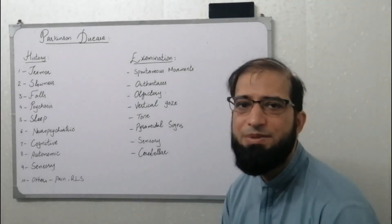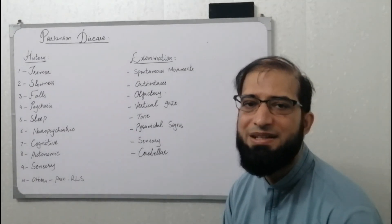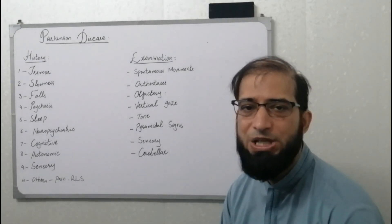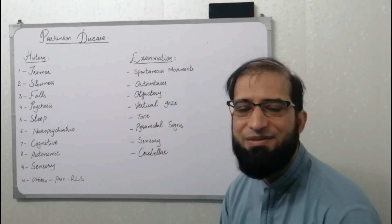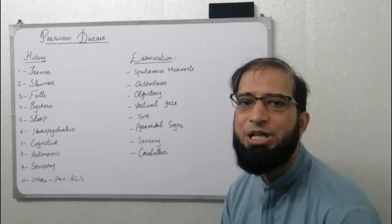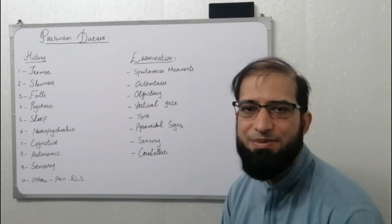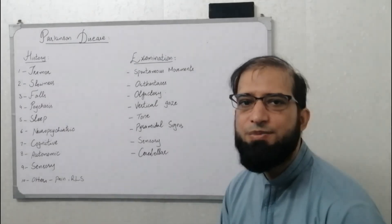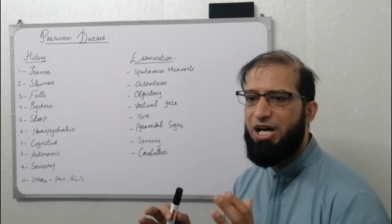Sensory assessment can be done to rule out other abnormalities, though there is commonly no objective sensory abnormality in Parkinson's disease. Cerebellar assessment is also important, as multi-system atrophy with cerebellar manifestations can fit into a Parkinson's disease variant — finger-nose-finger testing and gait assessment can be performed.